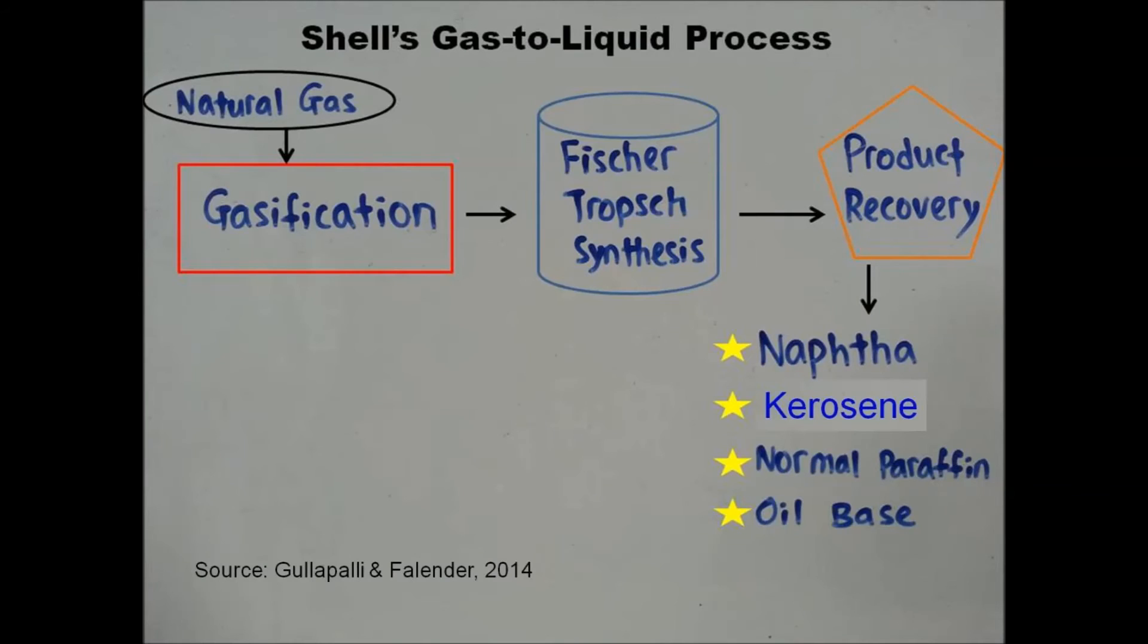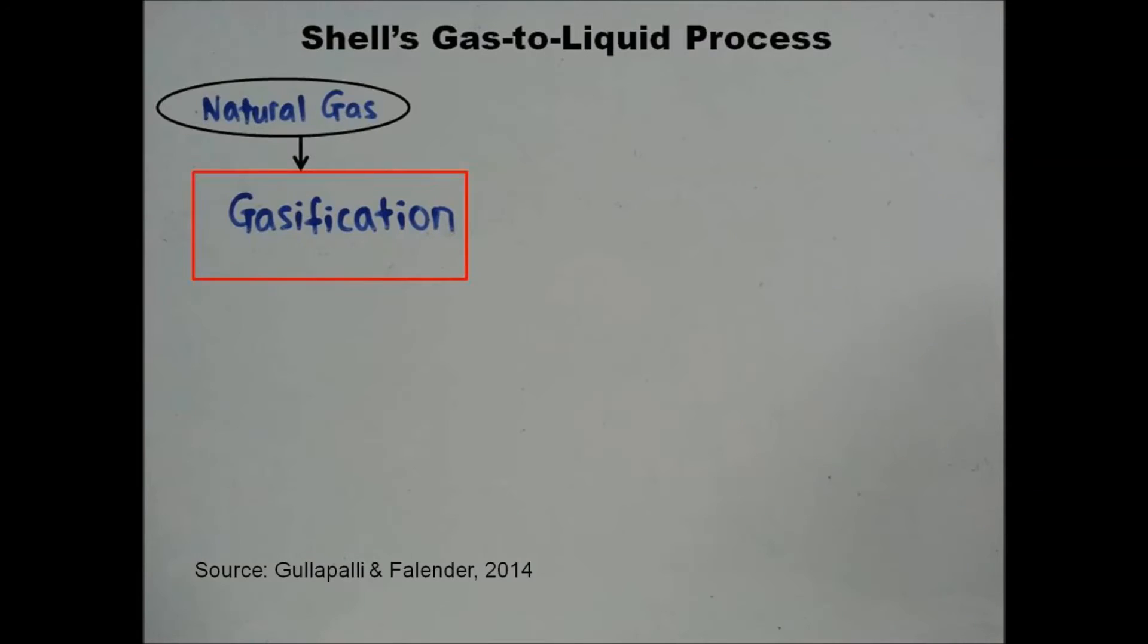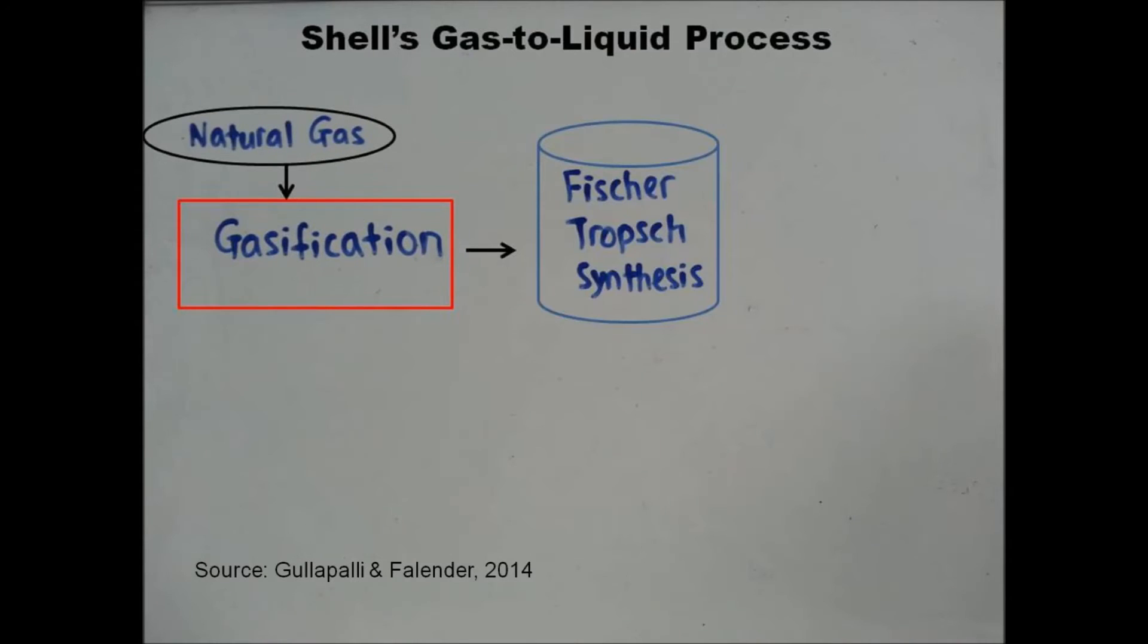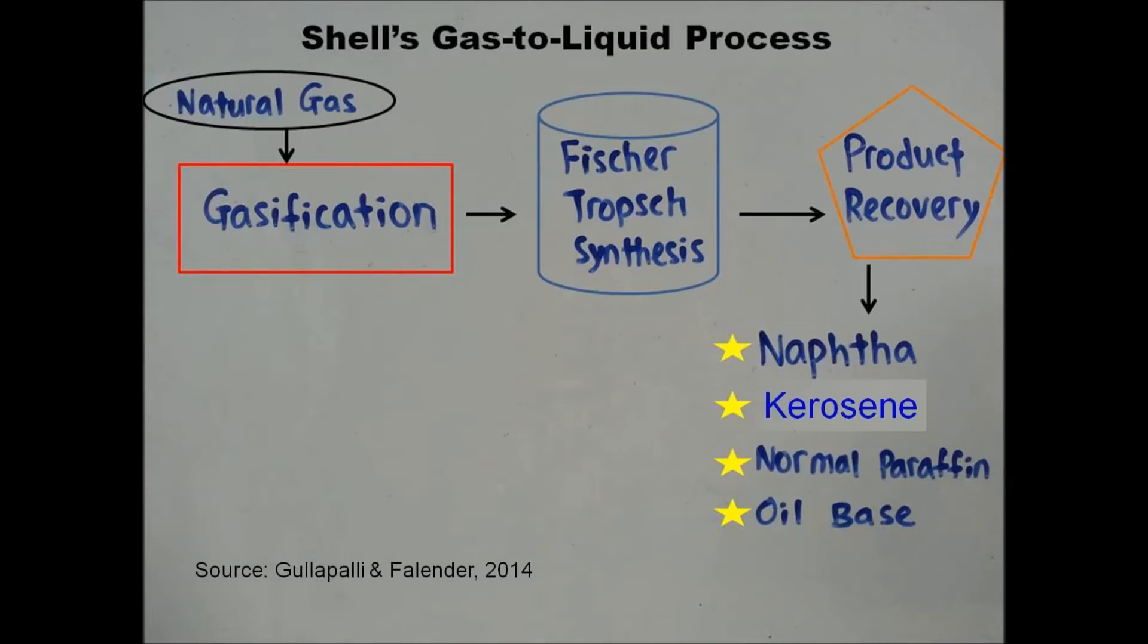The Shell gas-to-liquid process consists of three main sections that sequentially convert natural gas to the final product. They are gasification that generates syngas, the Fischer-Tropsch synthesis that converts syngas to liquid hydrocarbons, and product recovery.